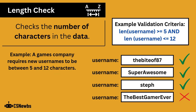A length check checks the number of characters in the data. For example, a games company requires new usernames to be between 5 and 12 characters. The first three usernames here are all between 5 and 12, but 'the best game ever' is more than 12, so it would not be accepted.